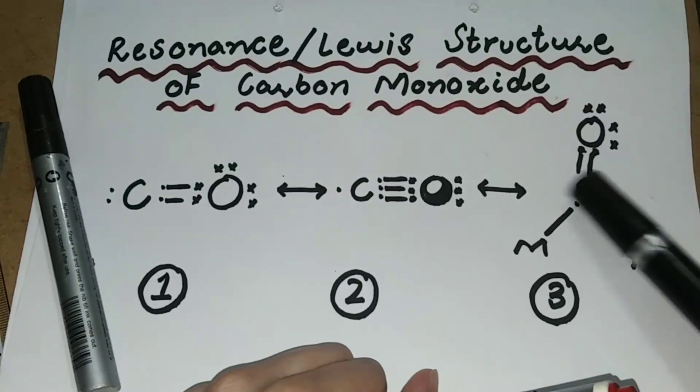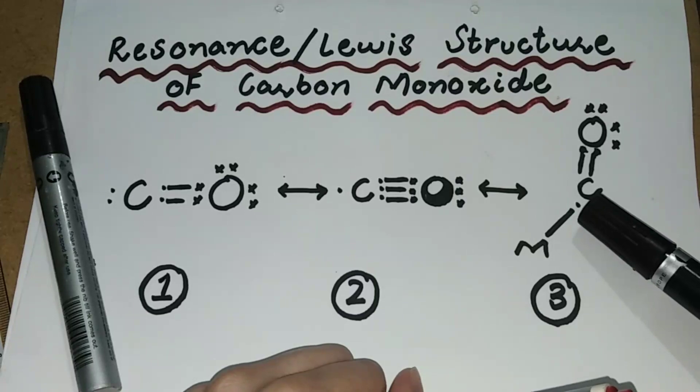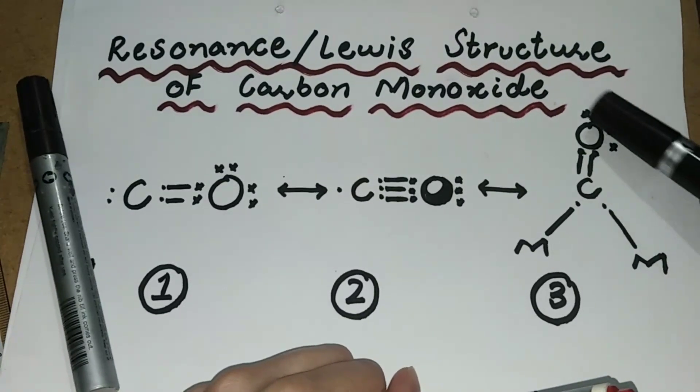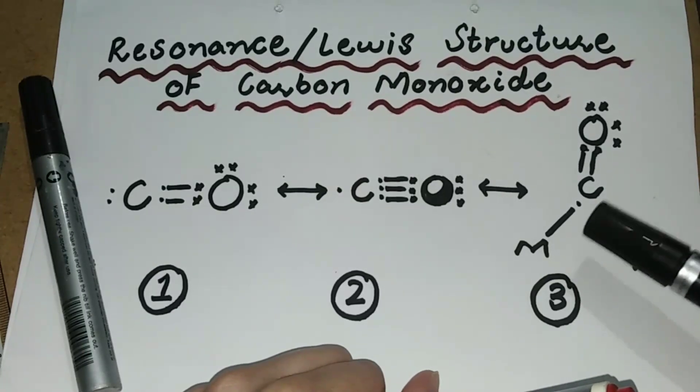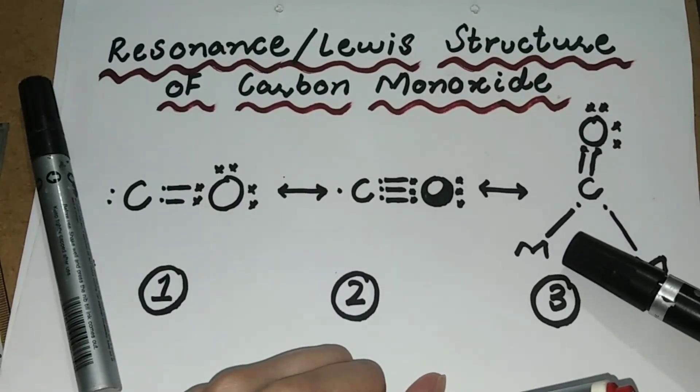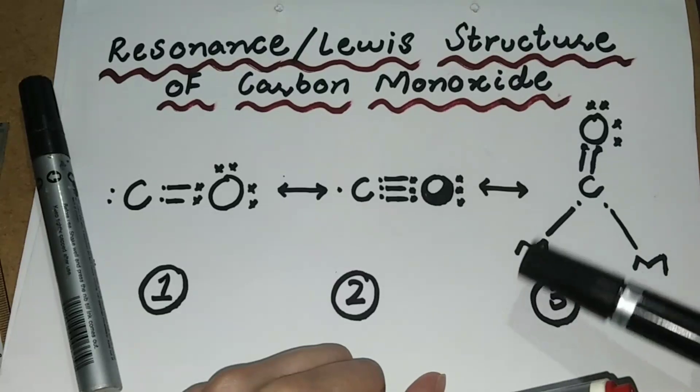In the third resonance structure, carbon forms again a double bond with the oxygen atom. Two lone pairs of electrons are present on oxygen and one pair of electrons are present on carbon atom that are used to form two bonds with two other atoms.